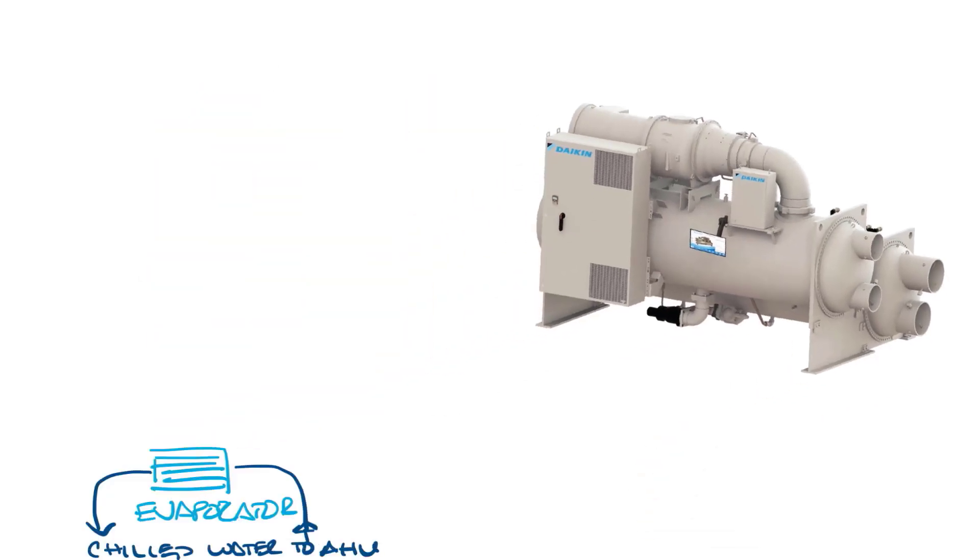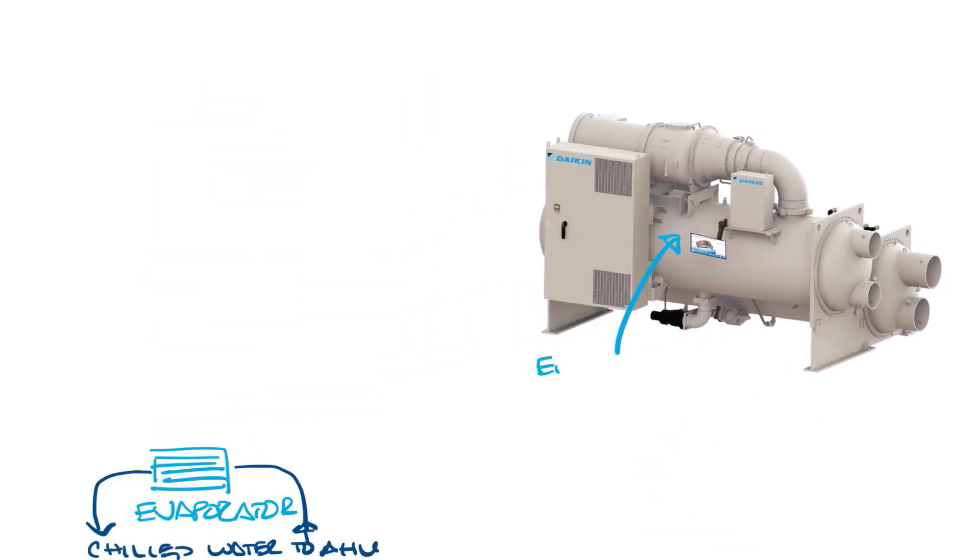So let's start with the evaporator down here. There will be a chilled water line that goes in and out of the evaporator that goes to the cooling coils on the air handler. So let's put a picture of a chiller over here so we can look at the components as I draw it. So this is the evaporator, so this tank section right here would be the evaporator, and then you have the chilled water in and out that's going to the air handler. This section would also be insulated.